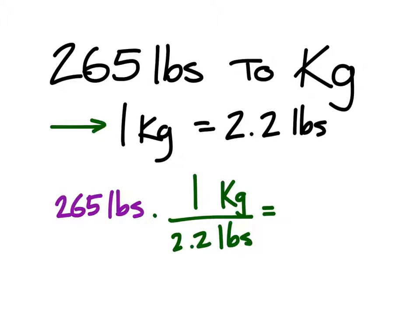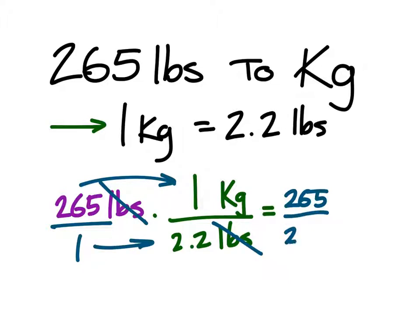So let's look at what happens here. The pounds here cross simplifies with this pounds here, and then I've got 265 times 1, which is 265. And you could show that over 1, so that you know what to multiply with the 2.2. And so we have 265 over 2.2, but now this is in kilograms.